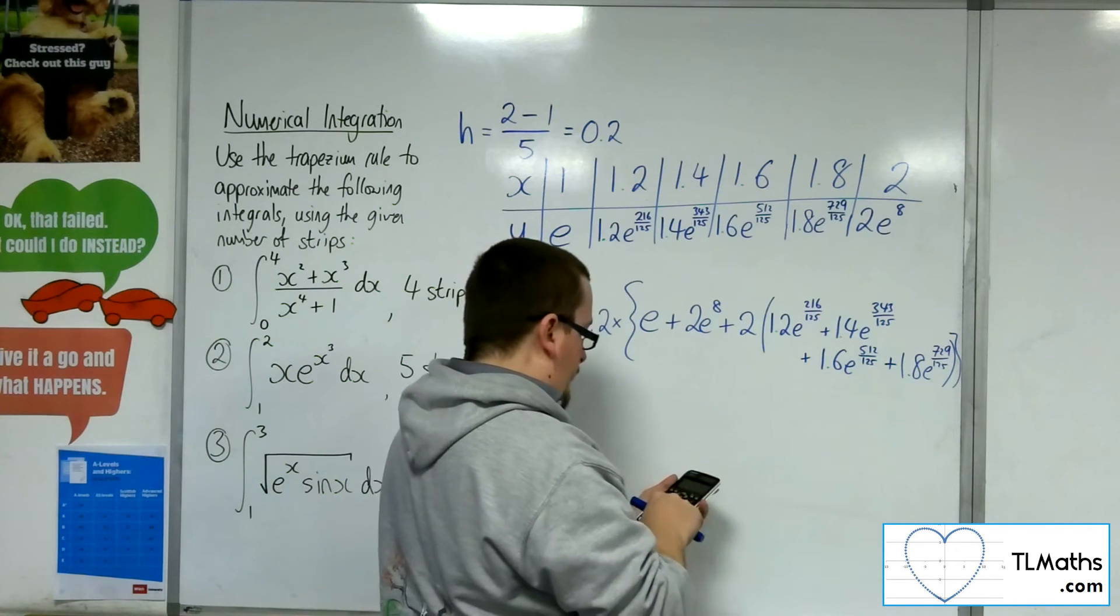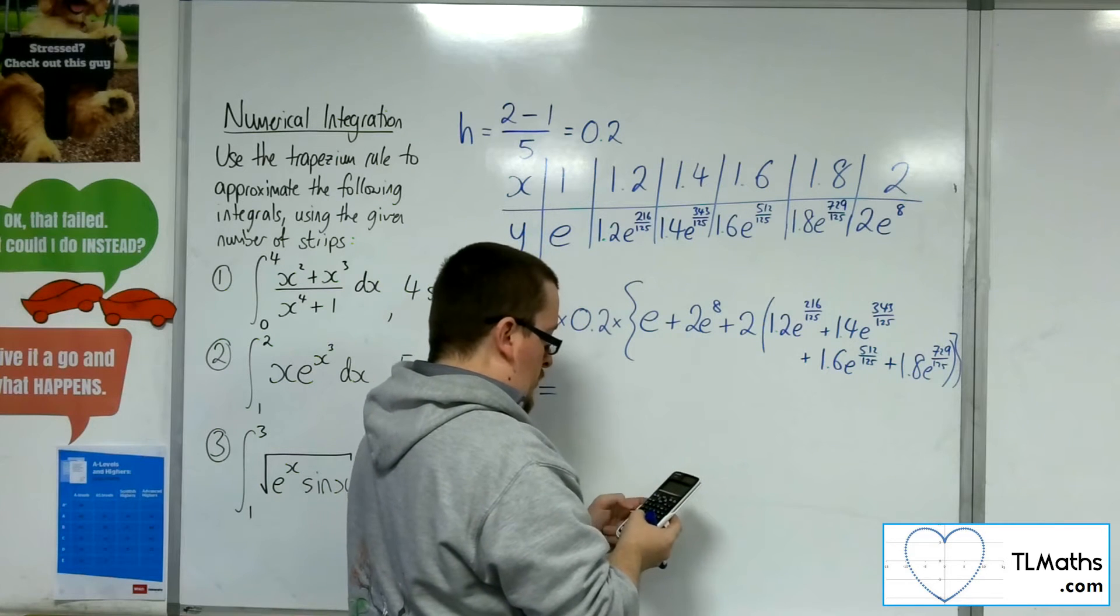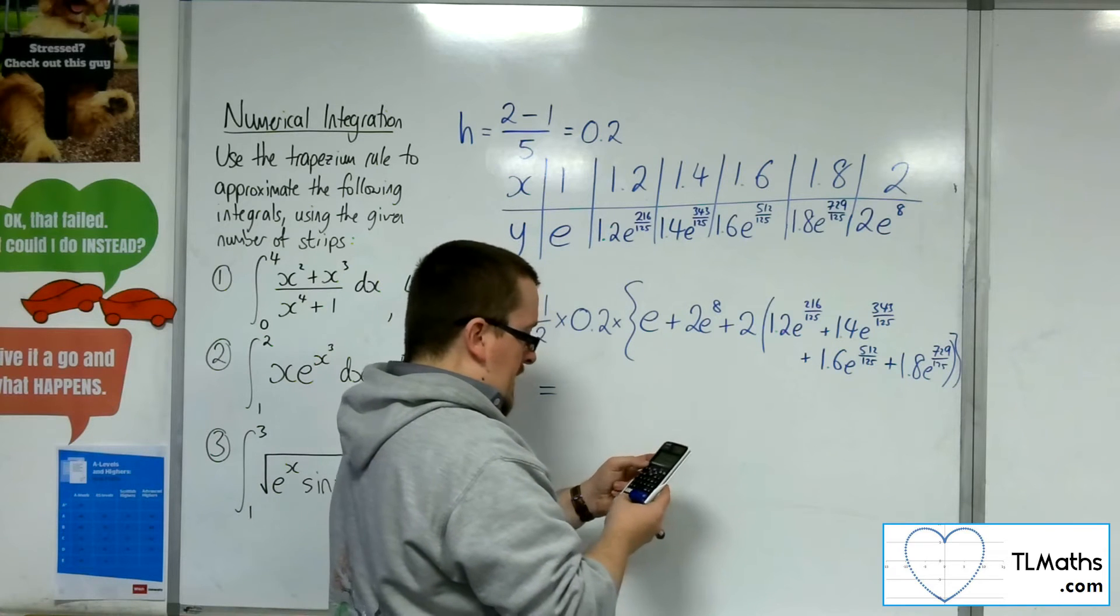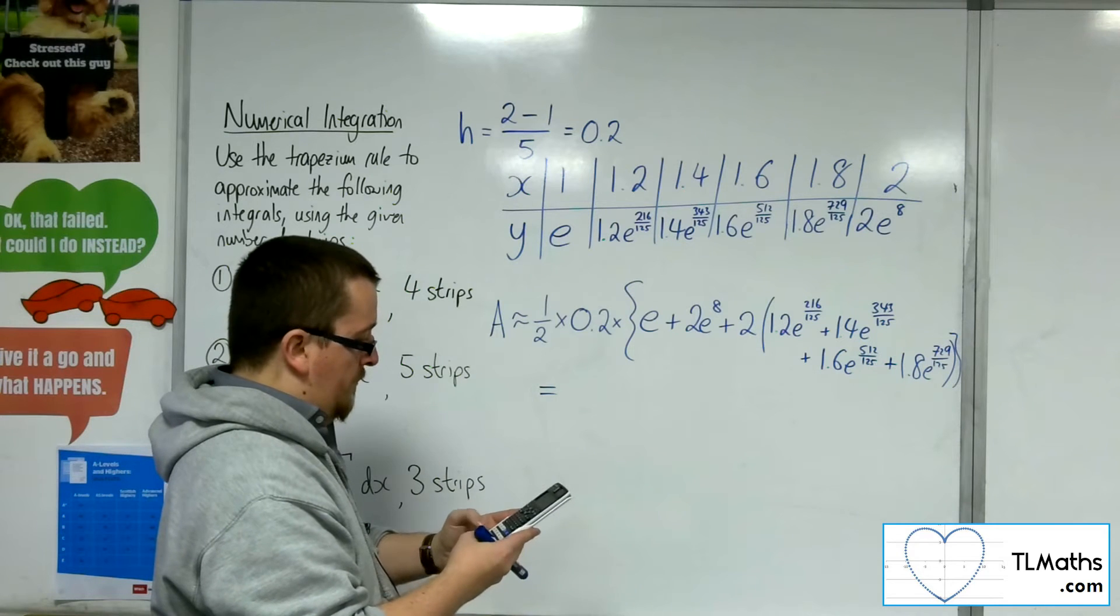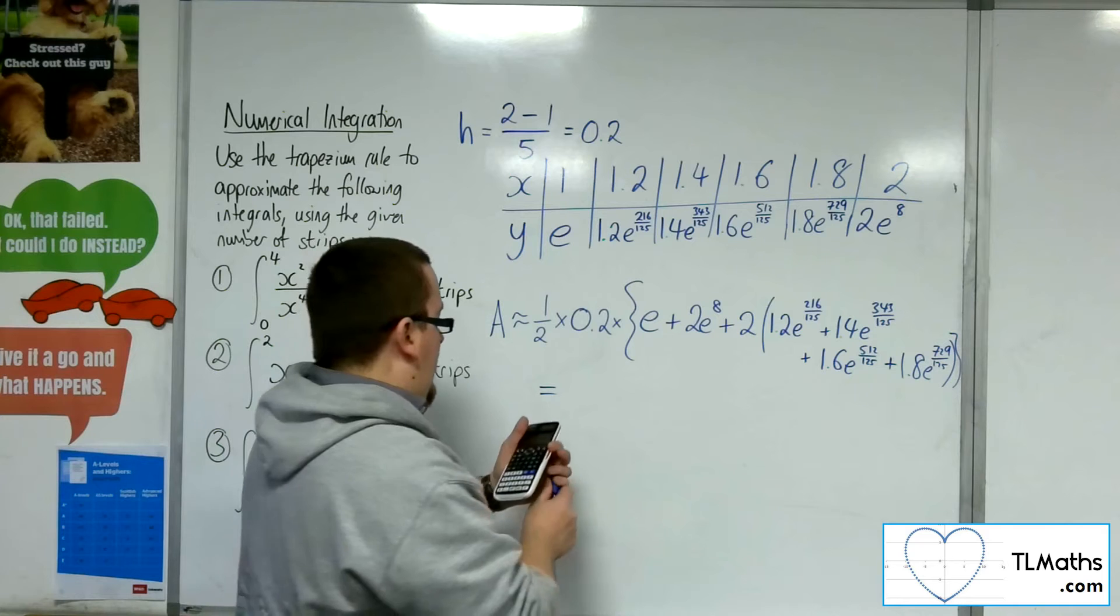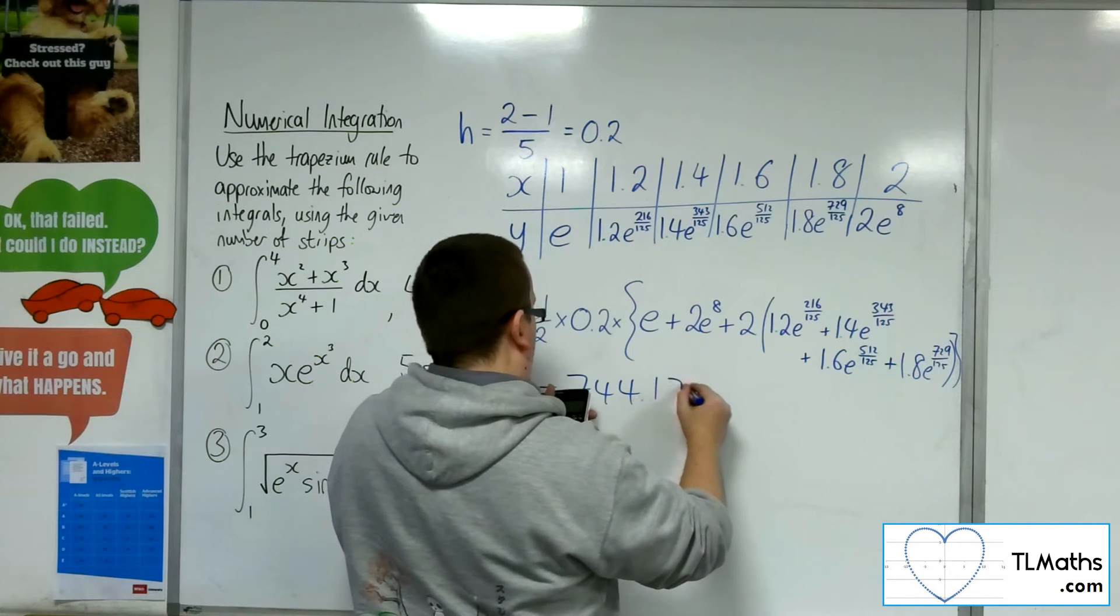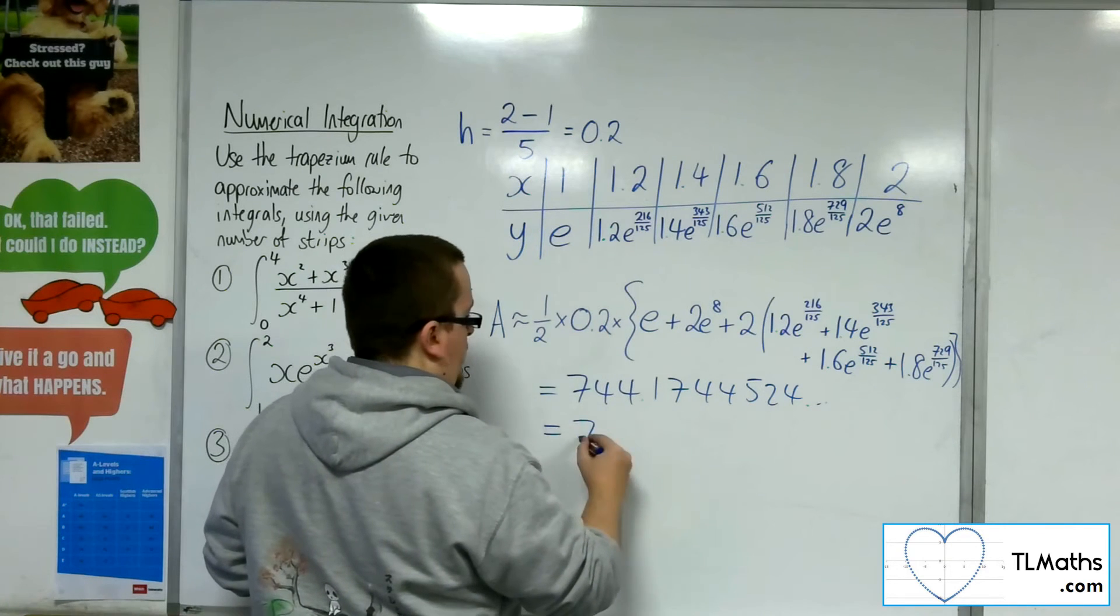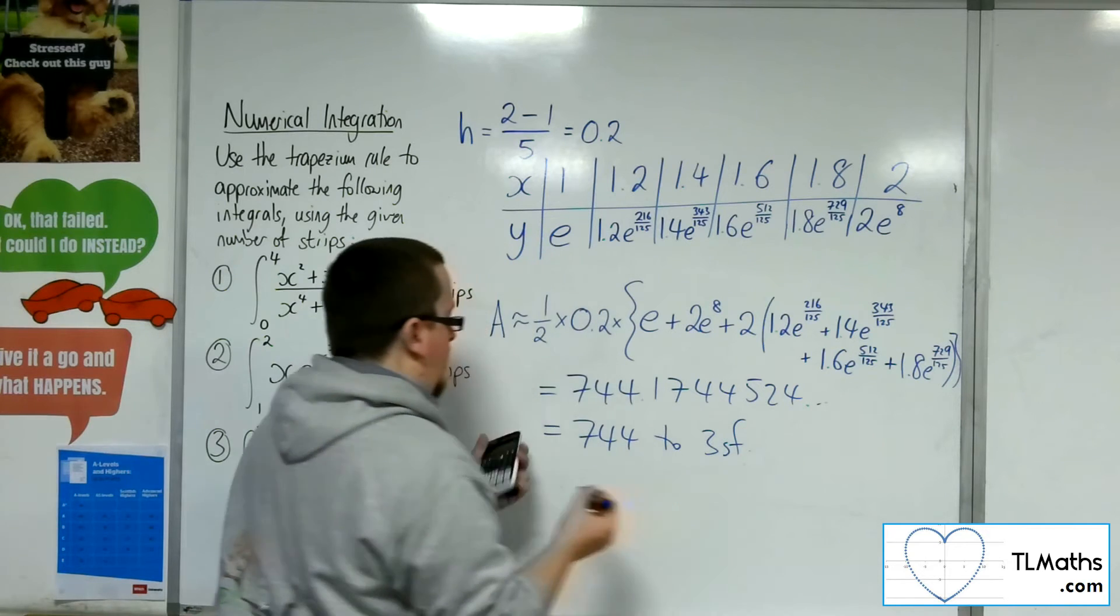So that gets me 738.555. I need to double it. I need to add on 2 times e to the 8. I need to add on e to the 1. I need to times it by 0.2. And I need to halve it. So that gets me 744.1744524. So 744 to 3 sig fig.